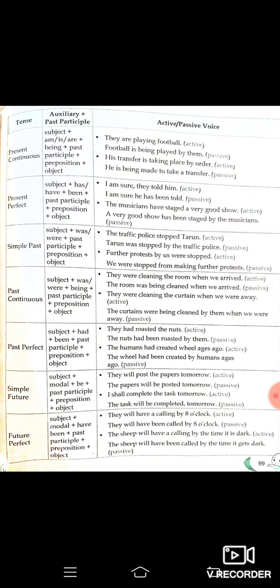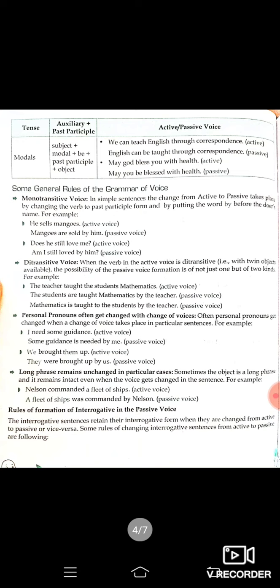Some general rules of the grammar of voice: In simple sentences, the change from active to passive takes place by changing the verb to past participle form and by putting the word 'by' before the doer's name. For example, to change active to passive, we write the verb in past participle form.